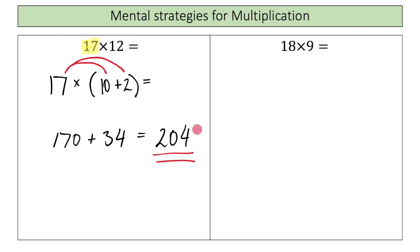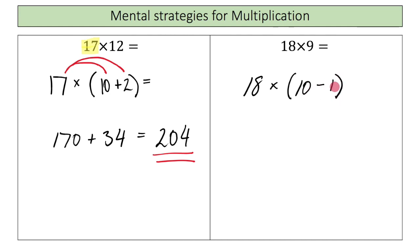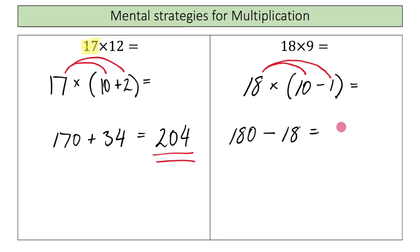Let's do another one. Here we have 18 times 9. This time I'm going to represent 9 as 10 minus 1, because I love multiplying by 10. Distributing the 18: 18 times 10 is 180, minus 18 times 1 is 18. So 180 minus 18 gives an answer of 162.